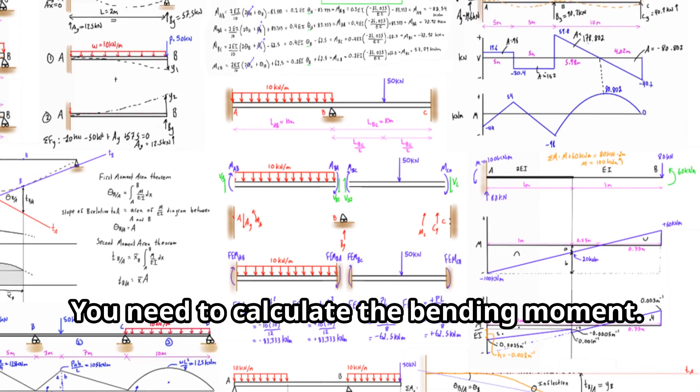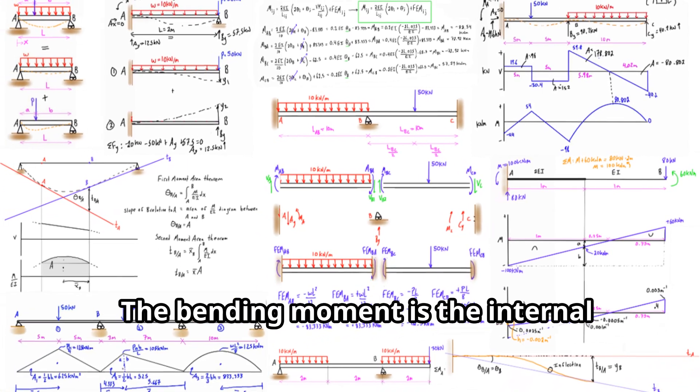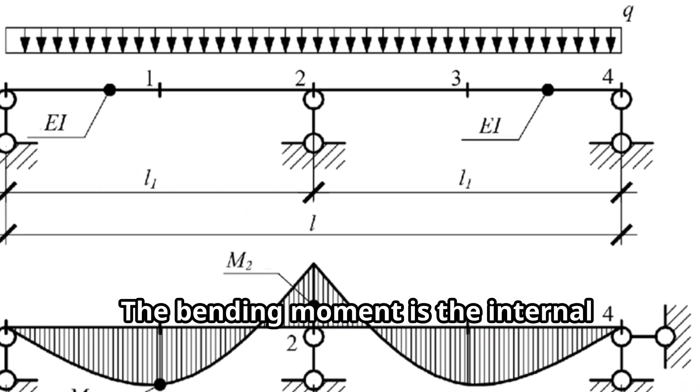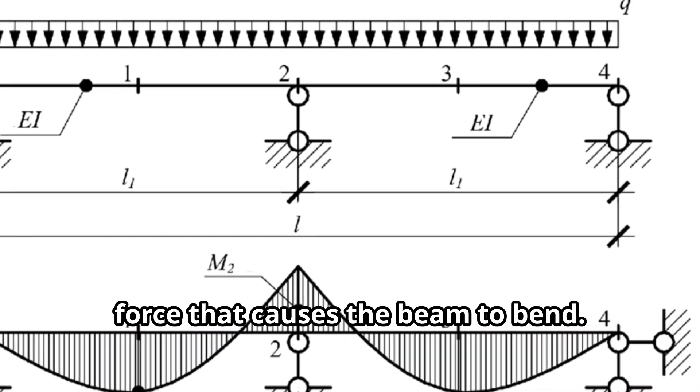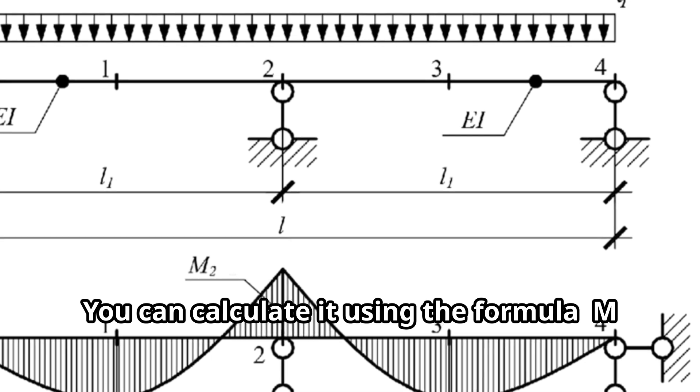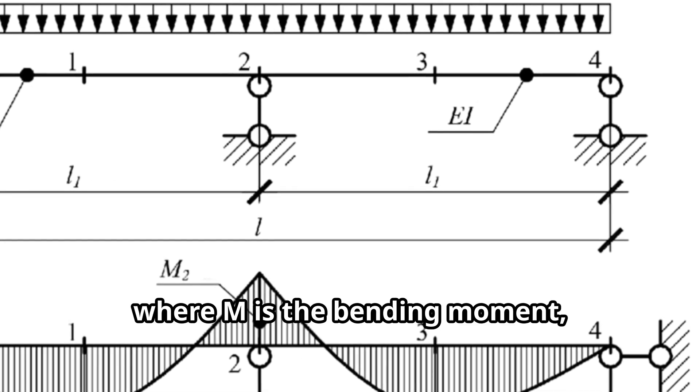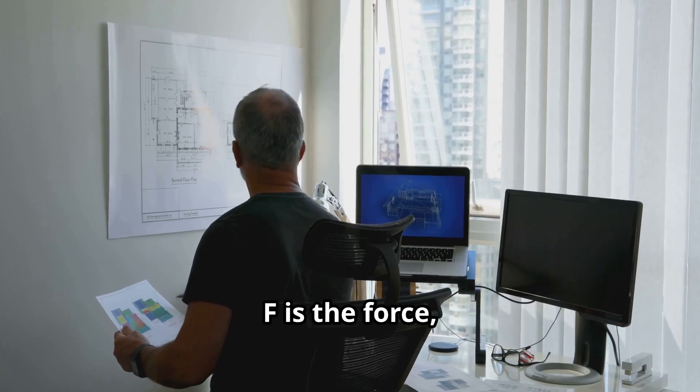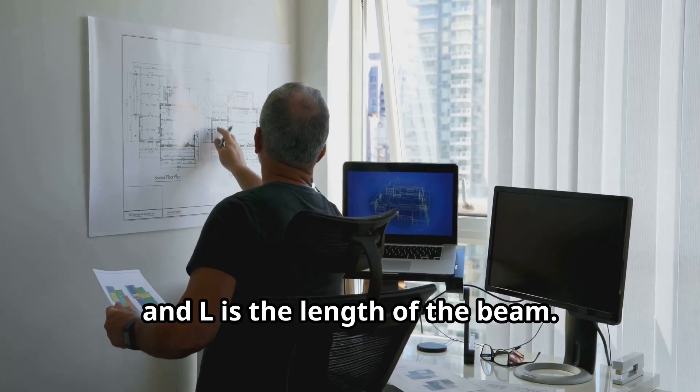Okay here's where it gets real. You need to calculate the bending moment. The bending moment is the internal force that causes the beam to bend. You can calculate it using the formula M = F × L where M is the bending moment, F is the force and L is the length of the beam.